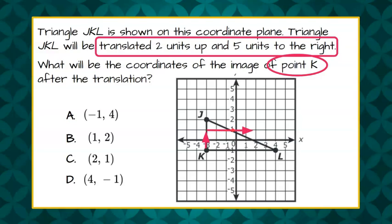That puts us at this ordered pair which is (2, 1), so over two, up one. That gives us an answer of C.